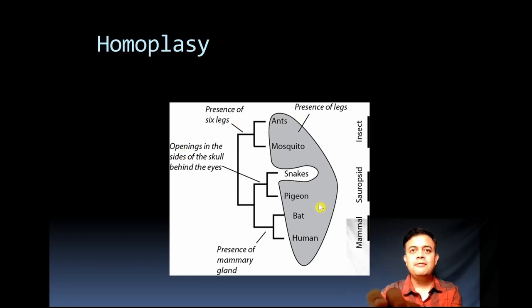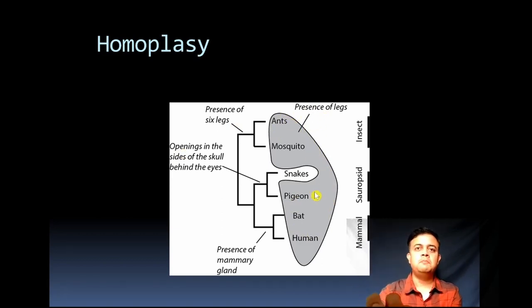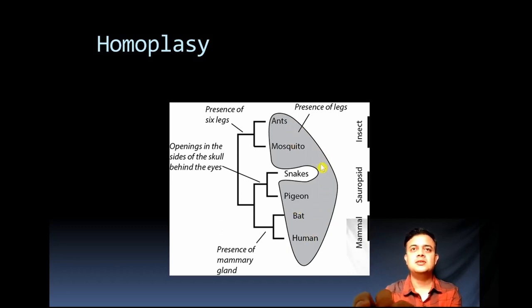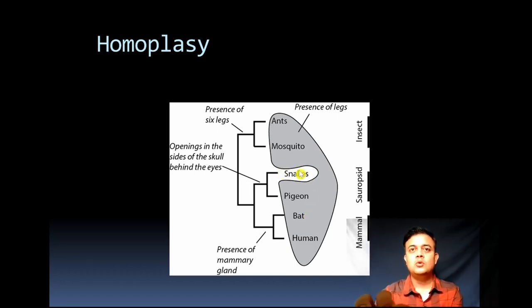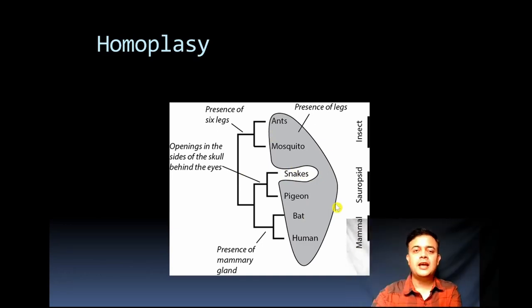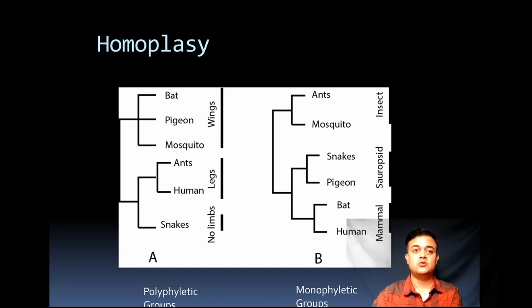Now you can see that these form a polyphyletic group. In the earlier picture, if you group all animals together based on the presence of legs — ant, mosquito, pigeon, bat, and human — that kind of character classification is based on analogy or analogous characters. It is not natural. Snakes have no legs and are treated differently, while all the rest are grouped together, making this an artificial classification.